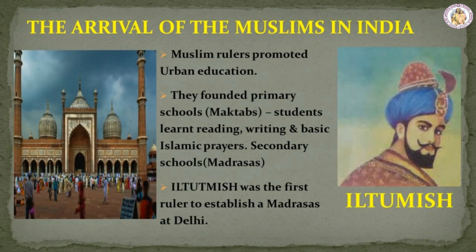The Arrival of the Muslims. Muslim rulers promoted urban education by bestowing libraries and literary societies. They founded primary schools called maktabs, in which students learned reading, writing and basic Islamic prayers. Secondary schools called madrasas were established to teach advanced language skills. Several madrasas were set up by the sultans and nobles. The main objective of these madrasas was to train and educate scholars. Ilthumist was the first ruler to establish a madrasa at Delhi. Gradually, many madrasas came into existence.